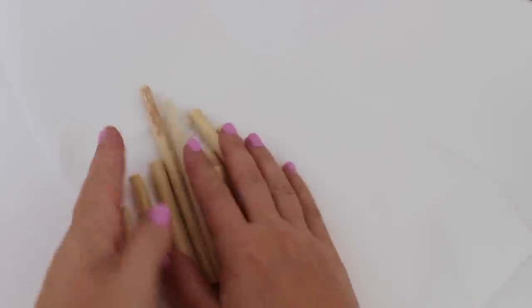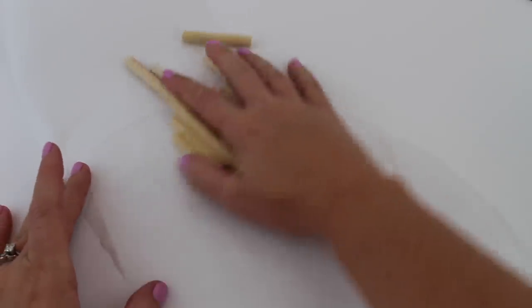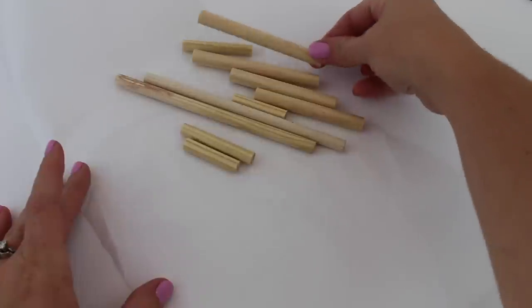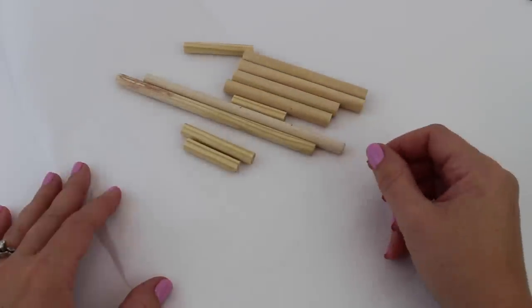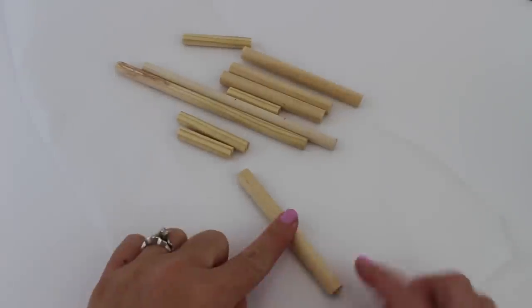Then take your craft dowels, lay them out on top of the parchment paper in the shape of a crutch. You can find the list of measurements on our blog at americangirlideas.com or you can just follow along. You can cut these dowels using an exacto knife and then just sanding down the rough edges.